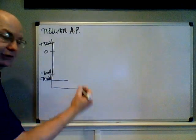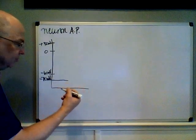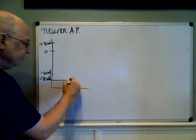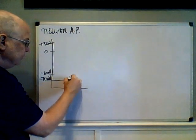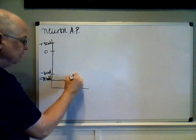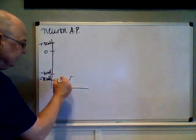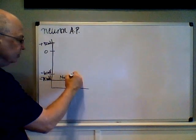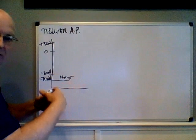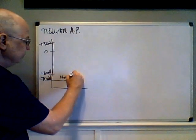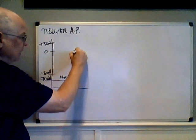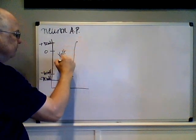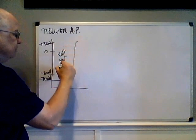If something causes chemically gated sodium channels to open — or maybe mechanically gated if it was a touch receptor — then it's going to drift to threshold. That's due to sodium leaking in. Once it hits threshold, the voltage-gated sodium channels begin opening at minus 60 millivolts and continue all the way through zero, with a little overshoot. This is all due to voltage-gated sodium ion channels.